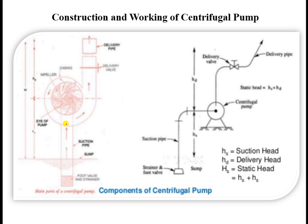This block diagram of the centrifugal pump shows the suction pipe and the delivery pipe. The eye of the impeller is visible, along with the backward curved vanes. These components are enclosed in a volute casing which has a diverging, increasing cross-sectional area. It is attached to the delivery pipe and delivery valve.